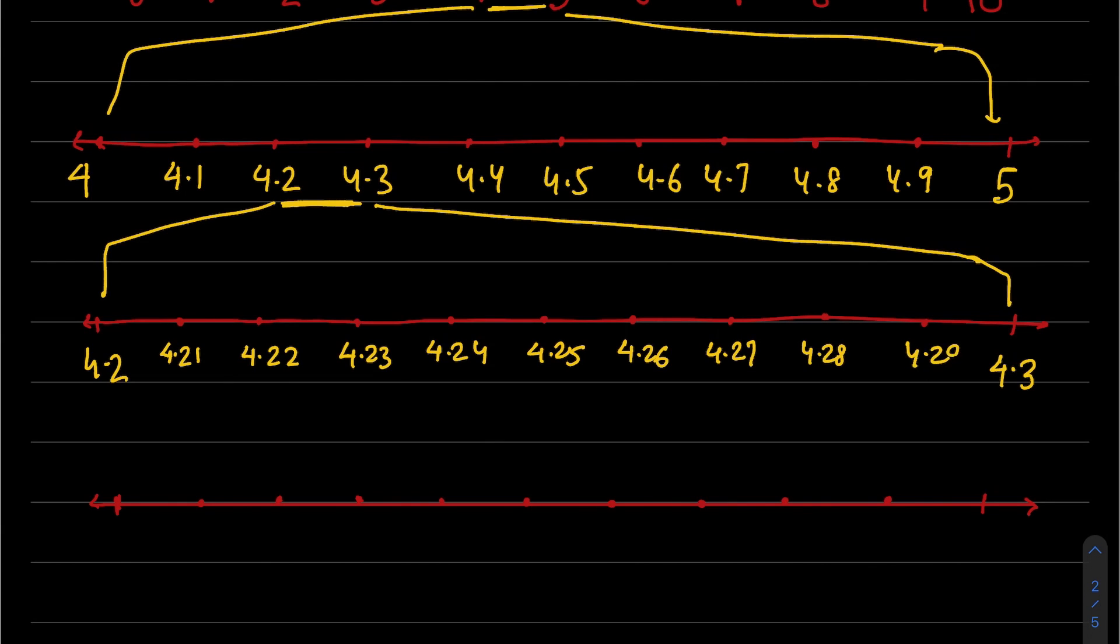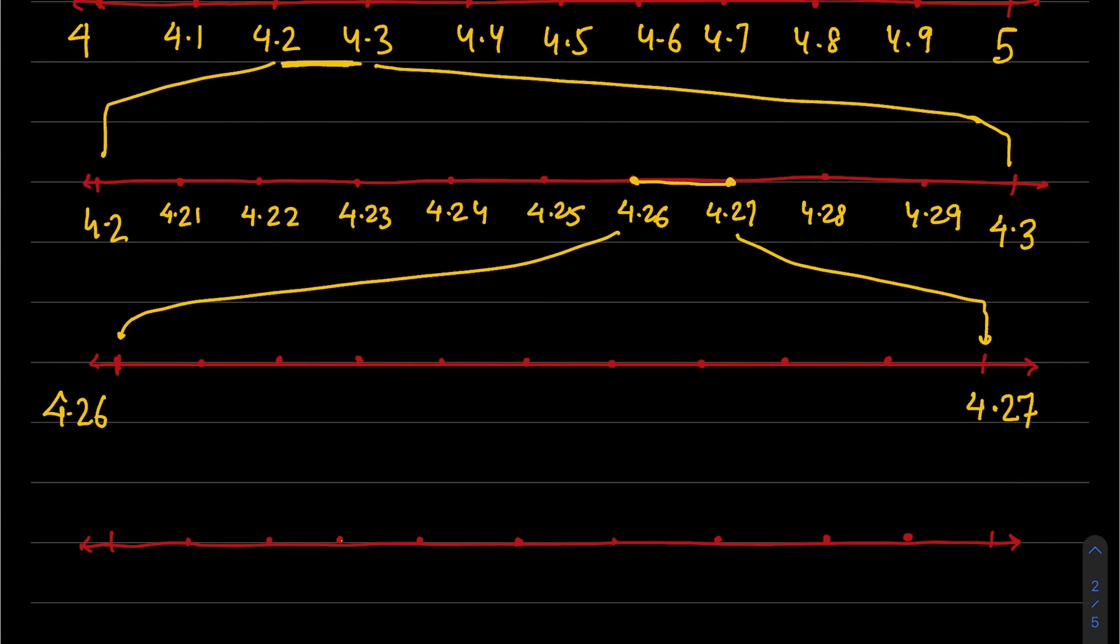Now between 4.2 and 4.3, the numbers will be 4.20, 4.21, 4.22, 4.23, 4.24, 4.25, 4.26, 4.27, 4.28, and 4.29. The number we need, 4.2626, will be between 4.26 and 4.27.